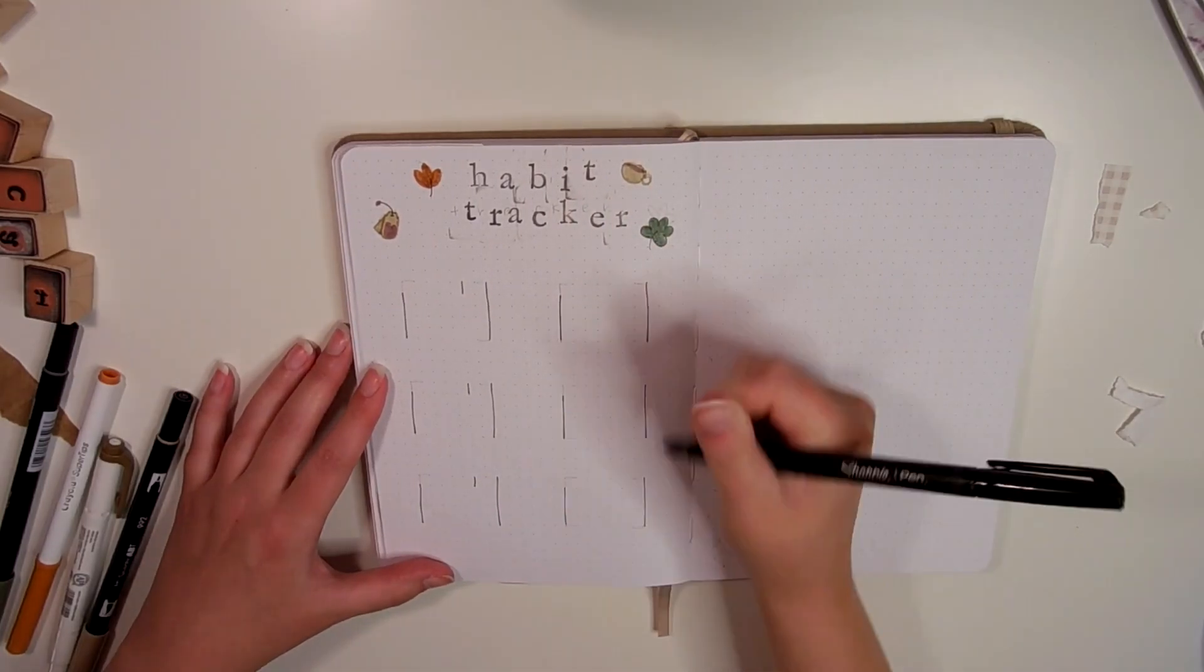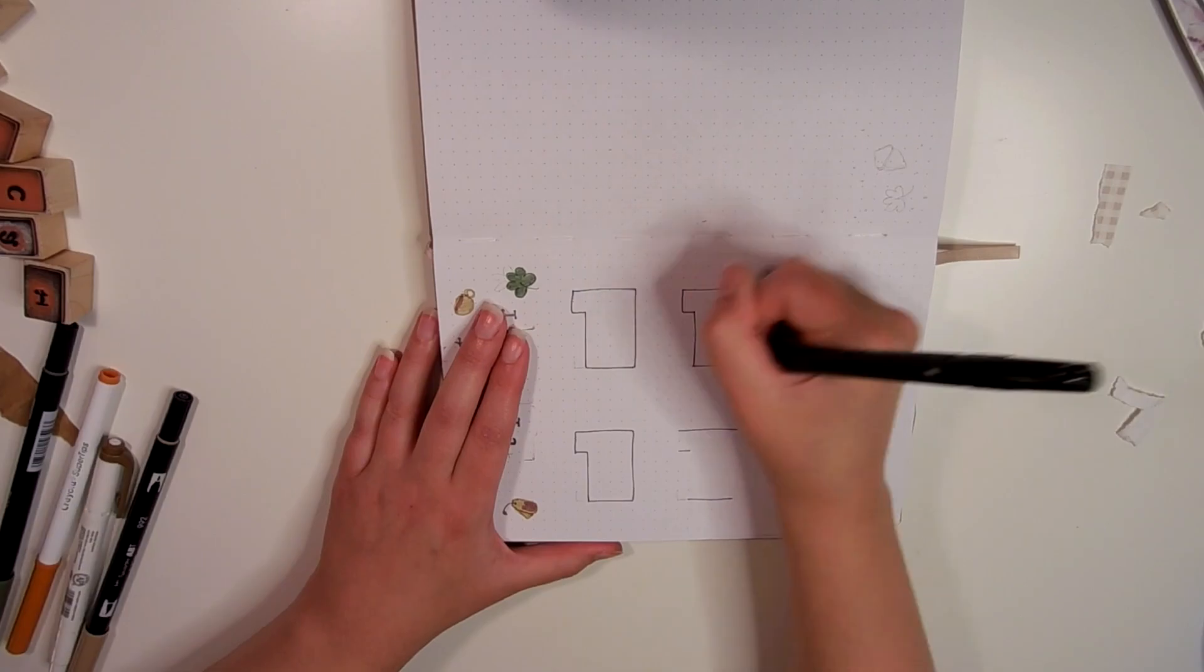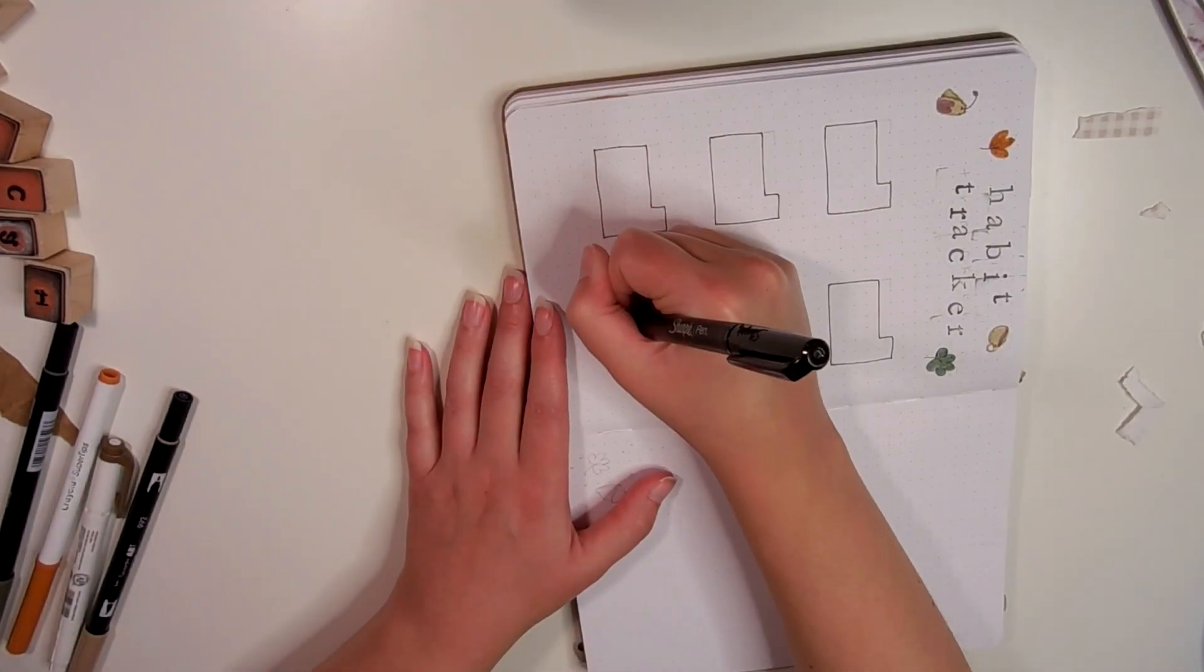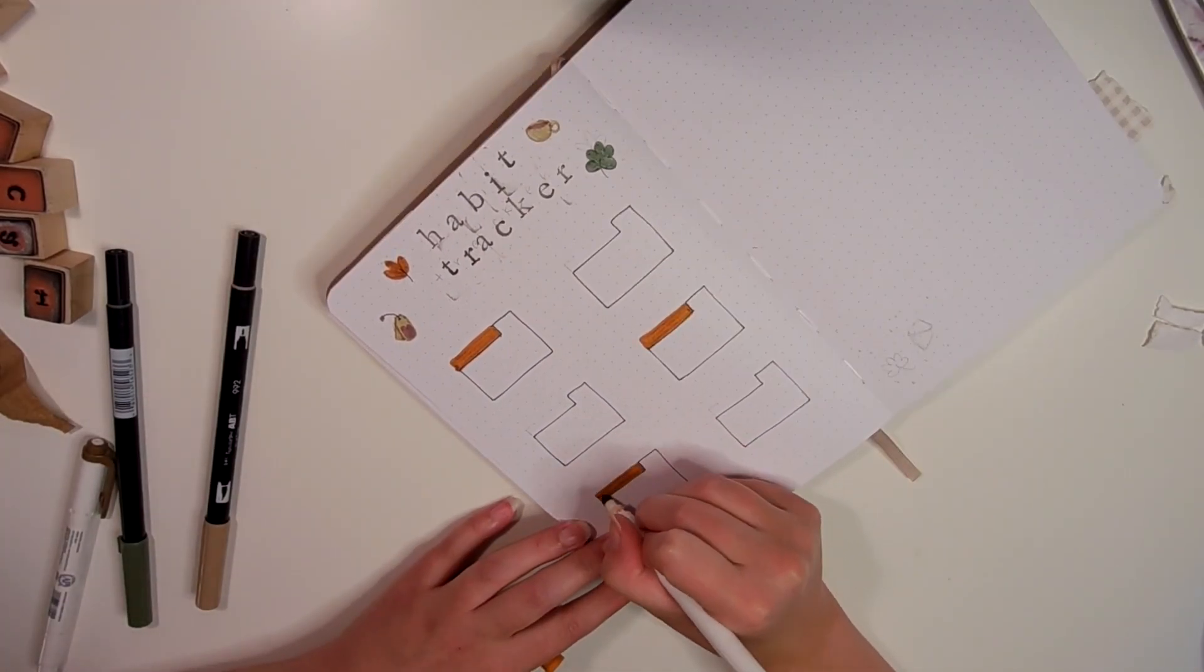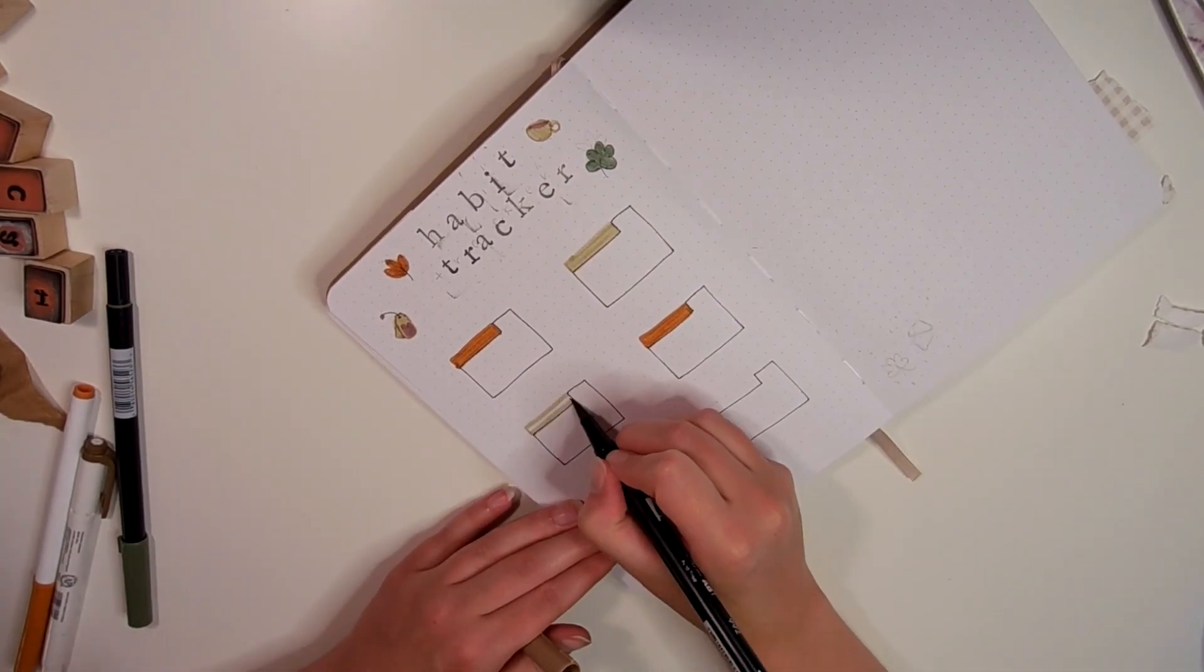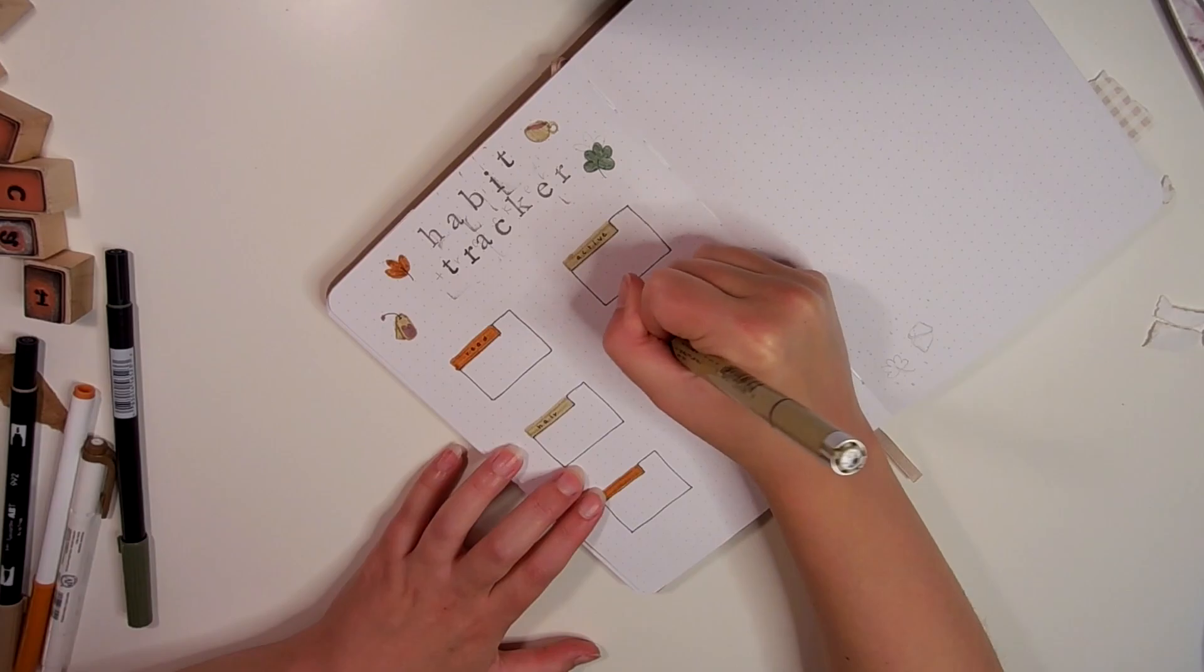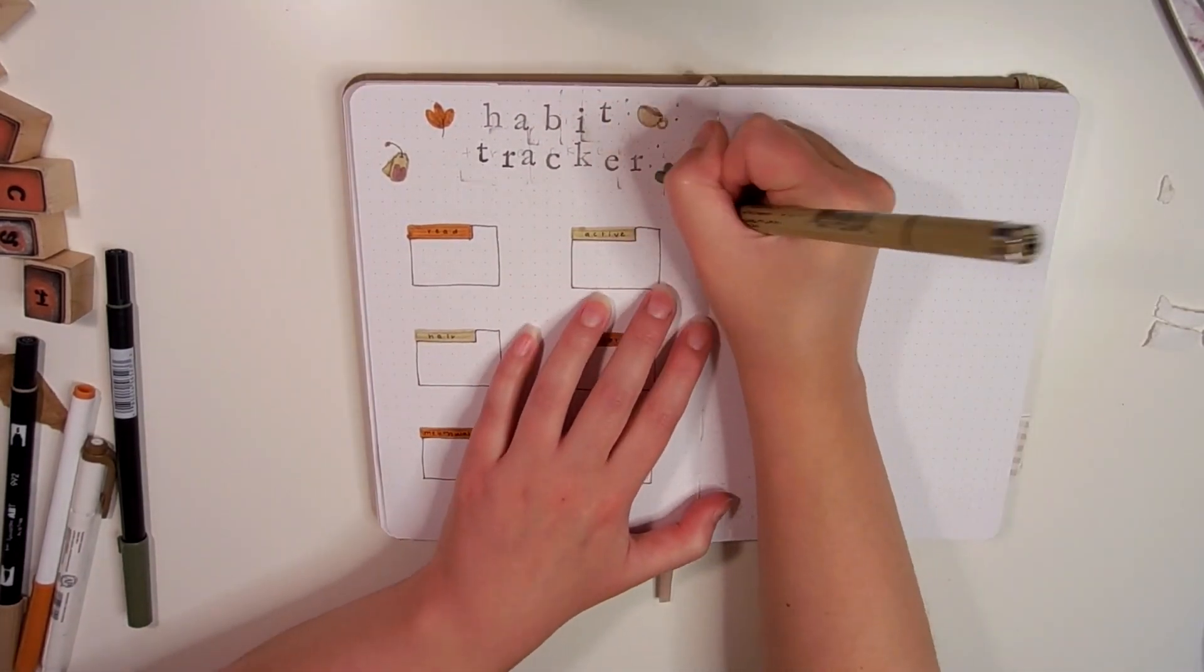The six habits I'm tracking are the same six habits I always track: when I read, when I wash my hair, when I do my skincare, when I use mouthwash, when I floss, and when I'm a bit more active. I was better about being more active at the beginning of the year—everyone's like 'new year, new me'—but I've definitely fallen off of it.